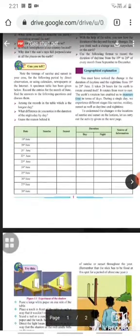Now let's see the geographical explanation. You must have noticed the change in the duration of daytime and nighttime from the 19th to 28th June. It takes 24 hours for the Earth to rotate around itself. It rotates from west to east. The Earth's rotation has enabled us to measure time in terms of days.